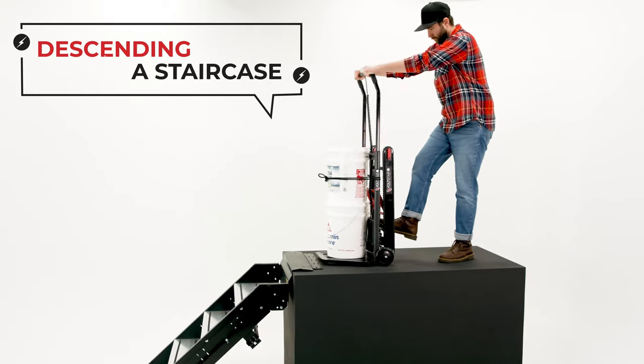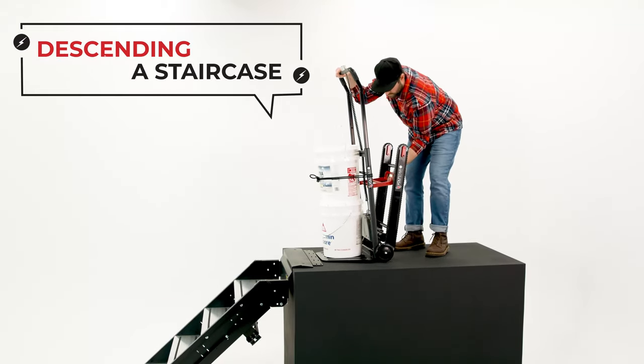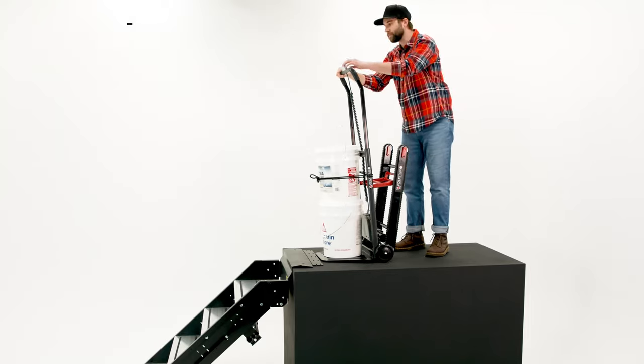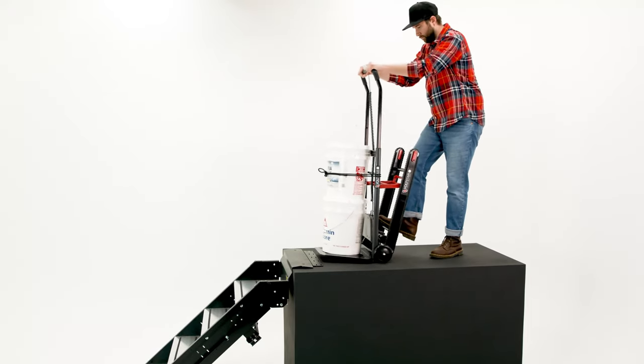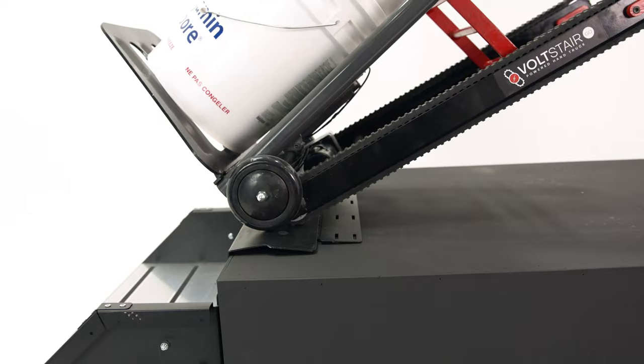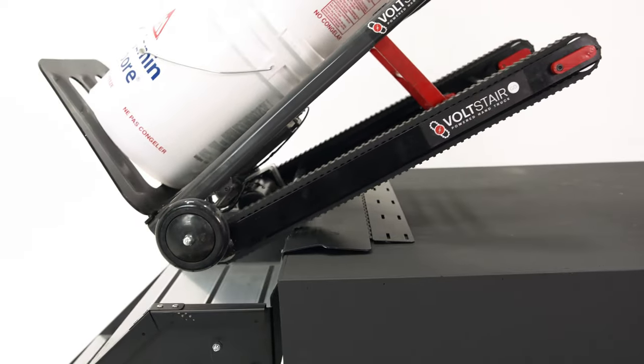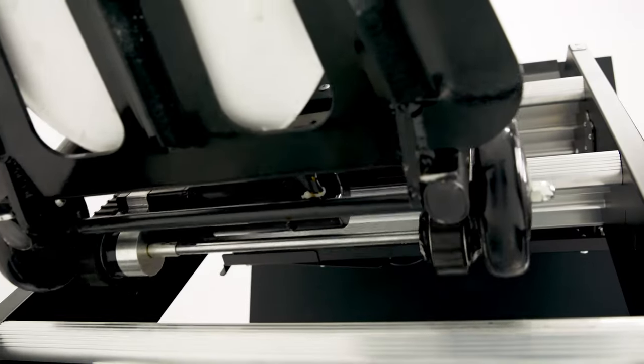To descend a staircase, make sure the tracks are locked in the extended position and turn on the battery and handlebar switches. Then, lean the Volt Stair Go back and push it towards the edge until the rubber tracks catch on the corner of the top stair. Press the handlebar towards the stairs as you descend.